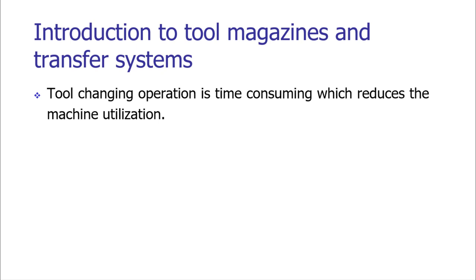We have seen the product lifecycle in our previous lectures. It has design-related and manufacturing-related operations. In manufacturing, we are transforming raw material into finished product using various machine tool arrangements. In machine tools, the tool is the critical parameter affecting productivity.